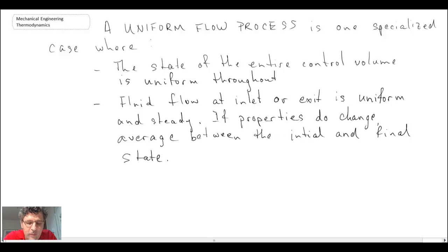What the uniform flow process assumes is that the state of the entire control volume is uniform throughout. That means that you do not have gradients, be it pressure or temperature within the control volume. You're assuming that the state is uniform throughout.